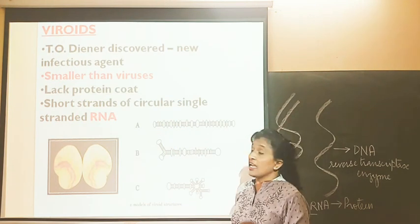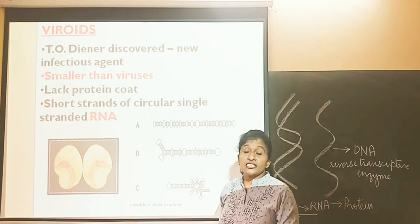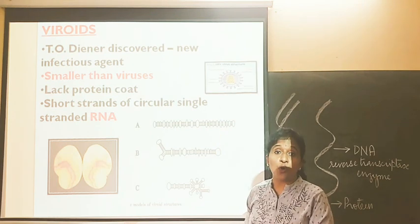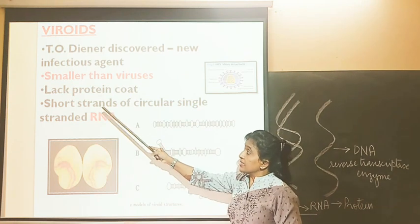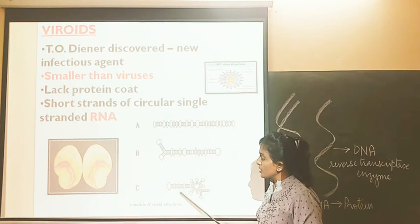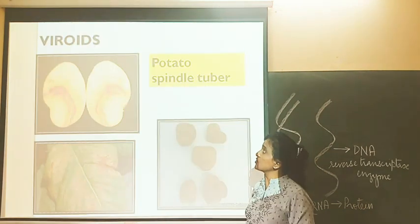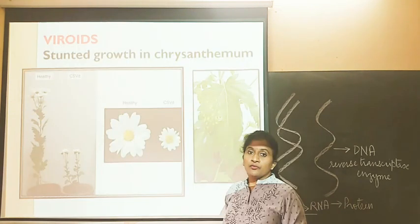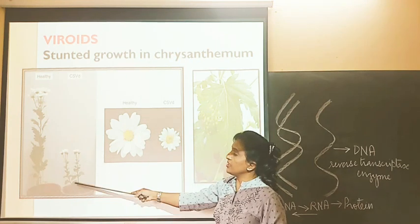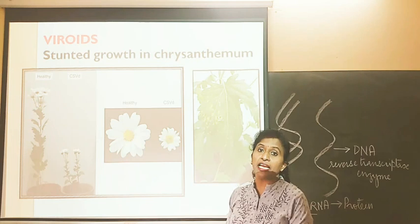Viroids are infectious pathogens smaller than viruses. They lack the protein coat and are short strands of circular single-stranded RNA. There are few different models of viroid structure. These infect plants and the disease caused is called potato spindle tuber disease. Viroids don't allow plants to grow properly, as seen comparing a healthy plant with a viroid-infected plant.